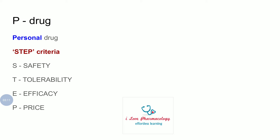Coming to the P-drug — P-drug stands for personal drug. The steps for selecting a P-drug can be remembered by the STEP criteria: S stands for safety, T stands for tolerability, E stands for efficacy, and P stands for price.